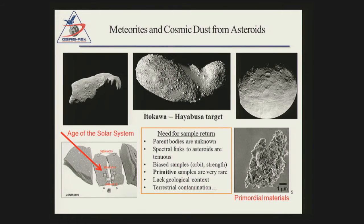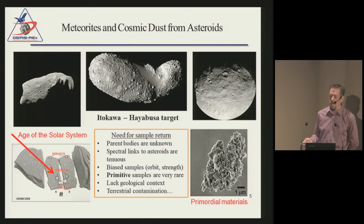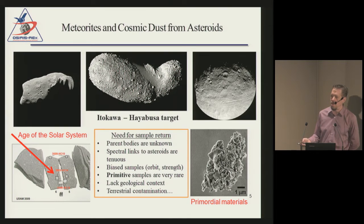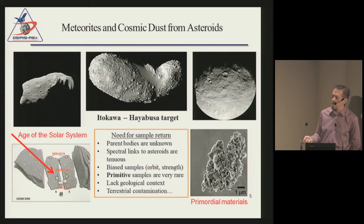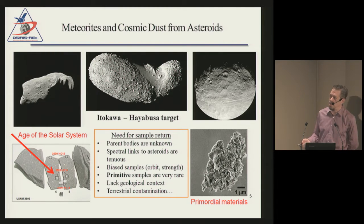There are strong feelings about where various classes of meteorites fit in the asteroid belt, but the reality is there's great uncertainty. These are also biased samples — meteorites are tough rocks, but most of the most primitive materials disintegrate on Earth through weathering very quickly. Primitive samples are therefore very rare. About 95% of the meteorites we find are not primitive, they lack geological context, and all samples are essentially contaminated immediately as soon as they reach the Earth.